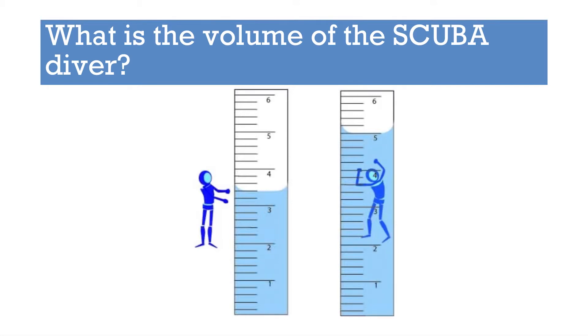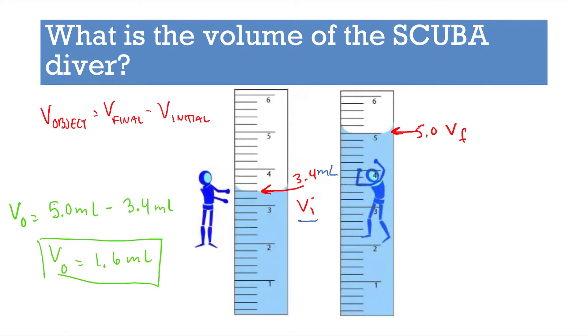So with this, what is the volume of this scuba diver? Do the same thing. Again, we're going to do final volume minus initial volume. Initial volume is 3.4 mL. Our final volume is 5 mL. If you do 5 minus 3.4, you get 1.6 mL.